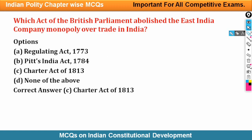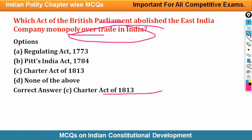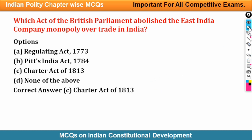Question: Which act of the British Parliament abolished the East India Company's monopoly over trade in India? The answer is Charter Act 1813.